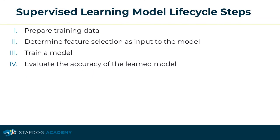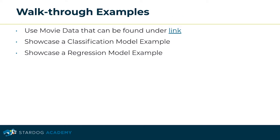There are four steps in the model development lifecycle of a supervised learning model. First is data preparation — data collection, cleaning, and data modeling structure. Second is determining the selected features as input to the training model. Third is the actual model training and model development. Fourth is the evaluation of accuracy of the learned model and the predicted results. We're going to walk you through two different examples — a classification and a regression machine learning model — using the IMDB movies dataset.